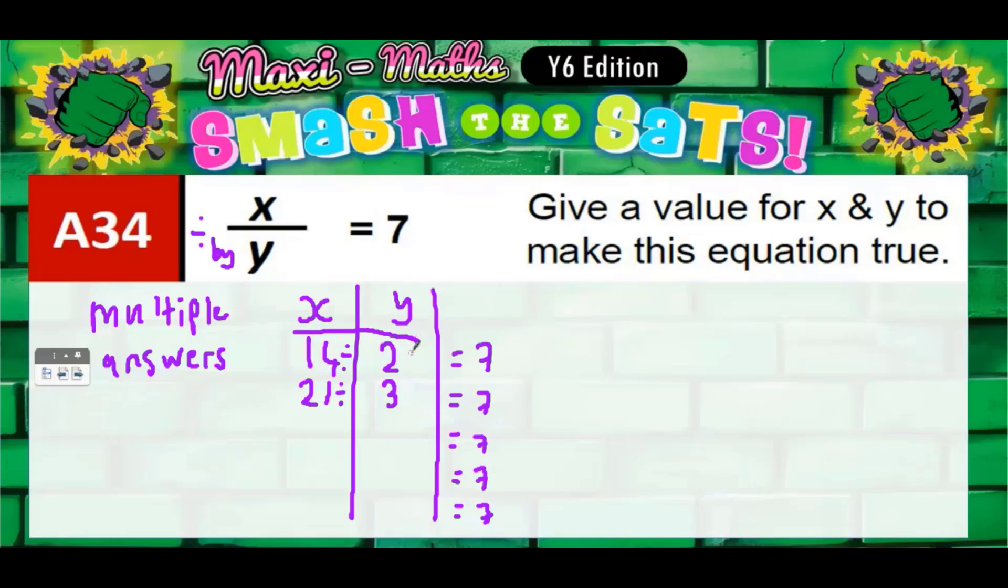Let's put a divide sign. Then if y was a 4, what number divided by 4 would give us 7? So 7 times 4 is 28, so it would have to be 28. 28 divided by 4 would give us 7.